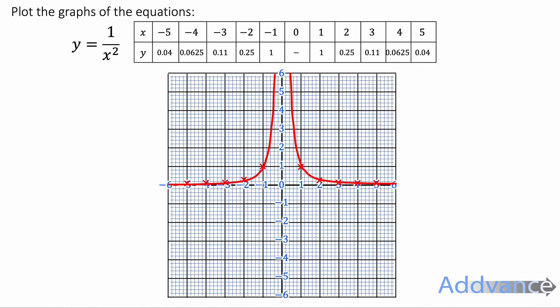It looks similar. It's just because it's 1 over x squared, the squaring makes everything positive. So both lines are on the top of the graph.